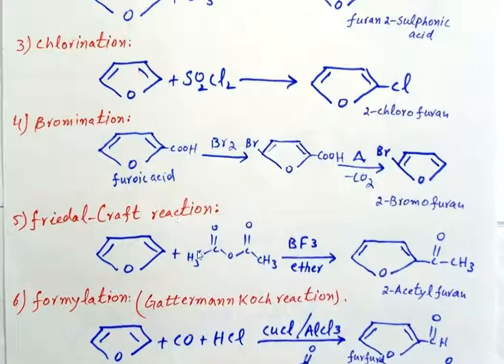The next reaction is Friedel-Craft reaction. In Friedel-Craft reaction, furan is treated with acetic anhydride. Acetic anhydride is the best source for acetylation, so the acetyl group will be removed in the form of a positive charge and substituted at position 2 of furan. The product we get will be 2-acetylfuran.